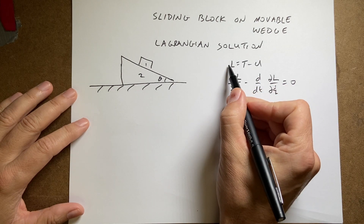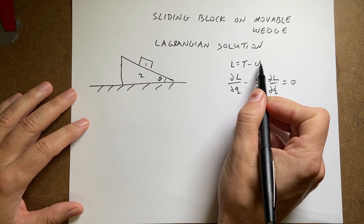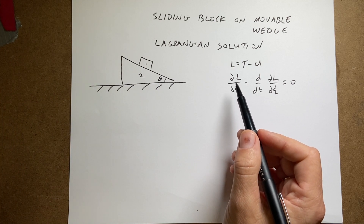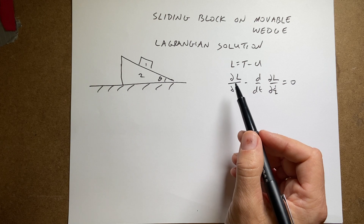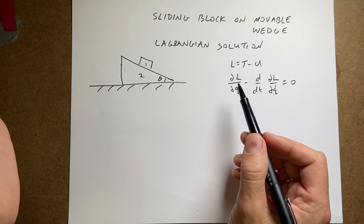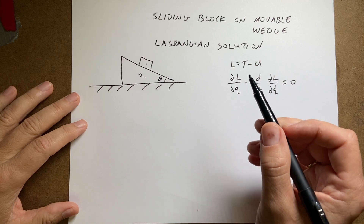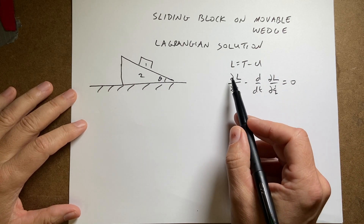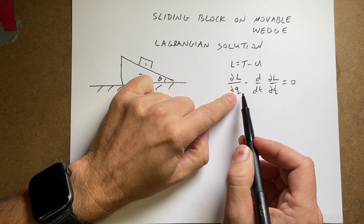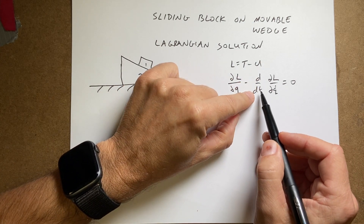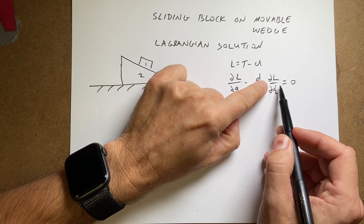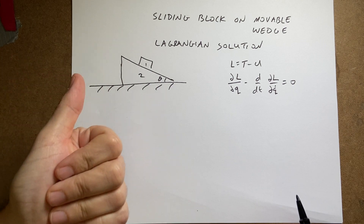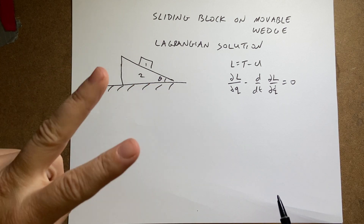Just a quick review: we calculate the Lagrangian as kinetic energy minus potential energy. The world path is that of least action, where the action is the integral of L over some time interval. The solution uses the Euler-Lagrange equation, which says the partial of L with respect to a variable q, minus the time derivative of the partial of L with respect to q-dot, equals zero. We'll calculate kinetic energy, potential energy, and apply this to two variables.